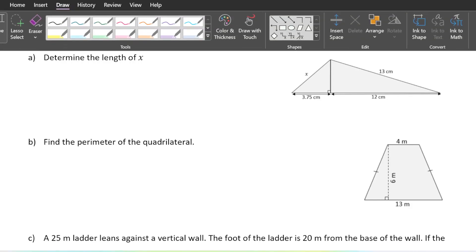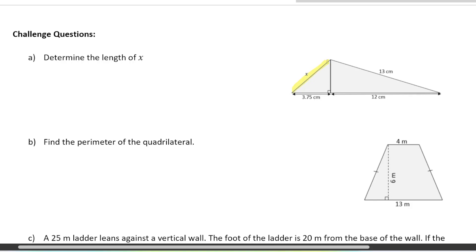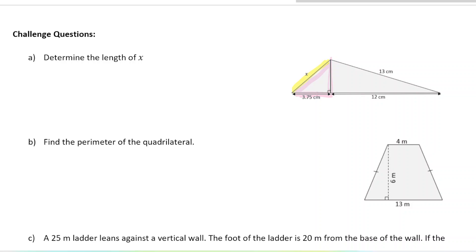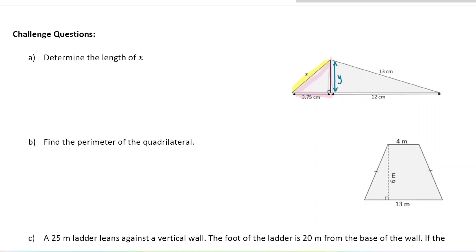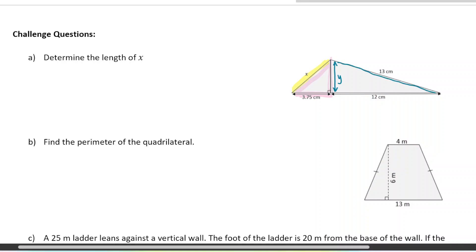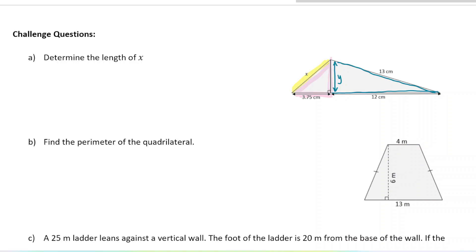For the first one, we're trying to find the length of this hypotenuse. However, we can't find it directly because in that triangle, we only know one of the sides so far — 3.75 — and the Pythagorean theorem only works when you have two sides. We need to find another side first before we can find that yellow hypotenuse. So we're going to find this side here; I'll label it Y since X is already being used. I'll find side length Y first and then side length X.